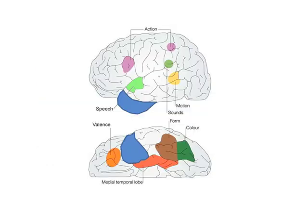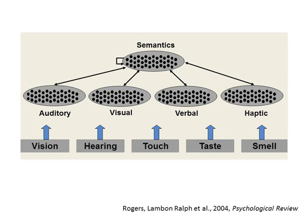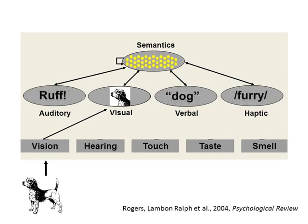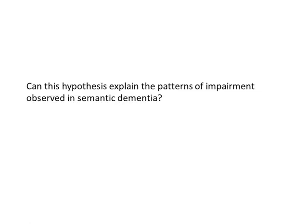On the basis of these observations, we proposed a different hypothesis: specifically, that the interactions between different sensory, motor, and linguistic representations in cortex are mediated by a single cross-modal hub situated in the anterior temporal cortices bilaterally. On this view, when a stimulus such as a visual image appears in the environment, activation first propagates toward the anterior temporal lobe hub, and then is broadcast from the hub toward other associated sensory, motor, and linguistic representations distributed throughout cortex. The question then was, can this hypothesis explain the patterns of impairment observed in semantic dementia?